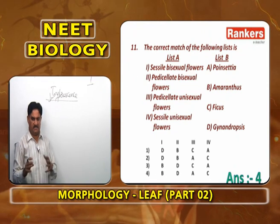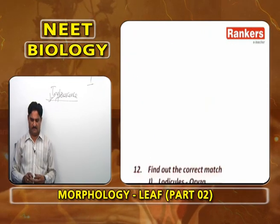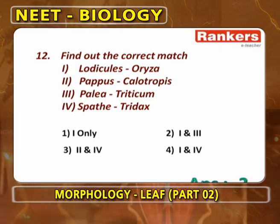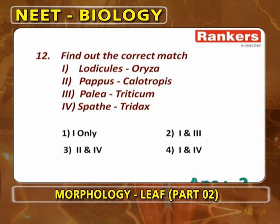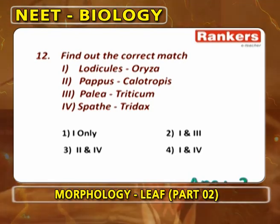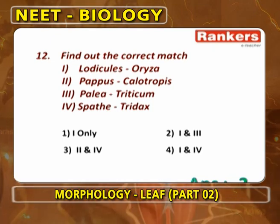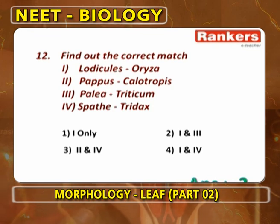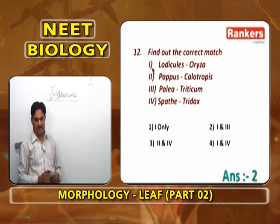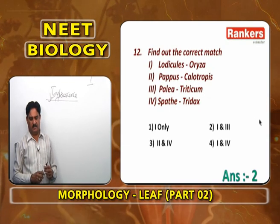Next: find out the correct match. Lodicules in Oryza — correct, because reduced perianth lobes in compound spike inflorescence of grass plants like Oryza are called lodicules. Pappus in Calotropis — wrong; pappus is hairy persistent calyx, not seen in Calotropis. Palea in Triticum — correct; reduced bracteoles are called palea in compound spike. Spate in Tridax — wrong; spate is found only in spadix inflorescence, not in Tridax (head inflorescence). Correct answers: 1 and 3.